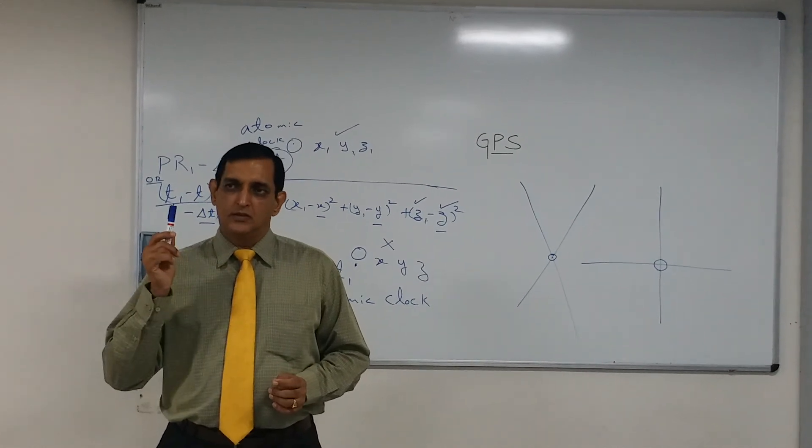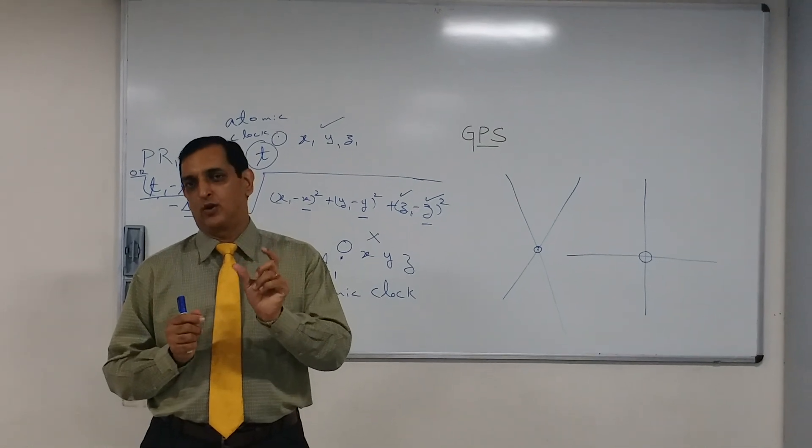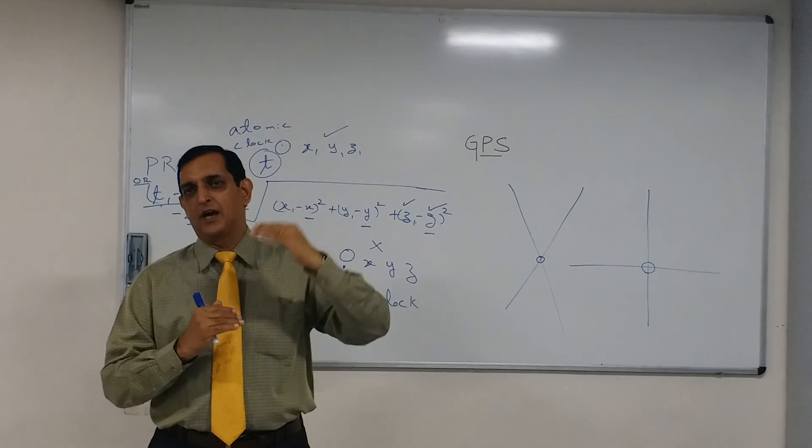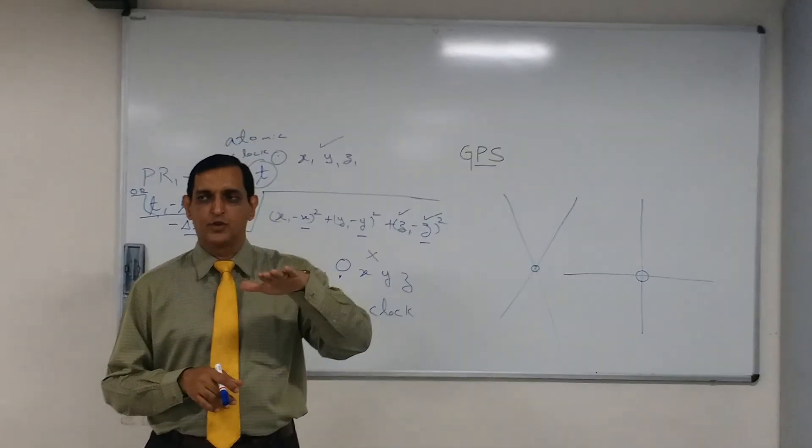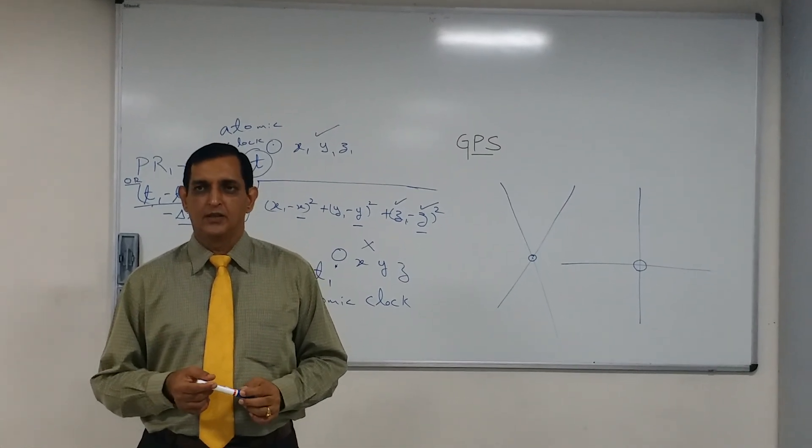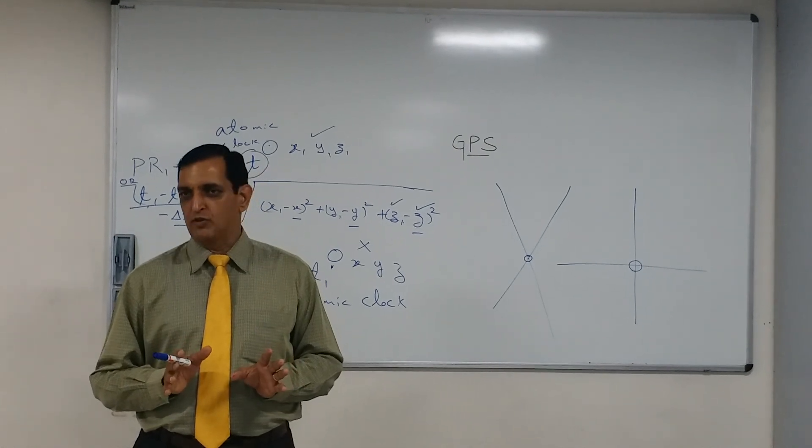Now, having said this generally your receiver will give you a value of GDOP. The lower the value of GDOP the higher is the positional accuracy. The higher the value of GDOP the lower the positional accuracy. Is it clear what is GDOP or geometric dilution of precision?